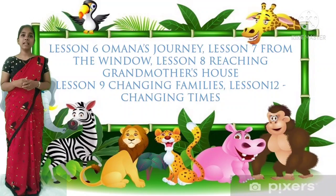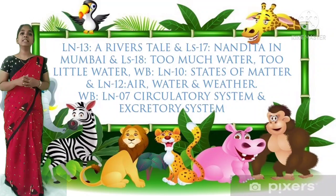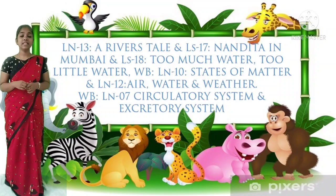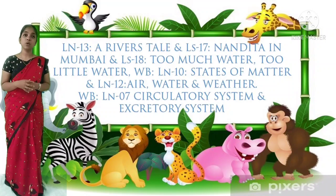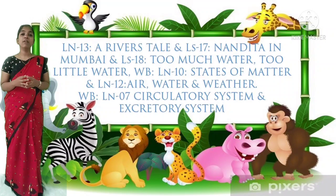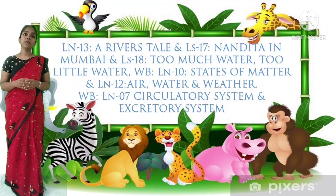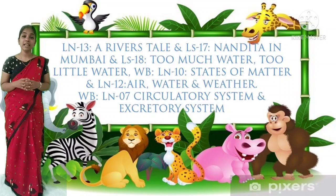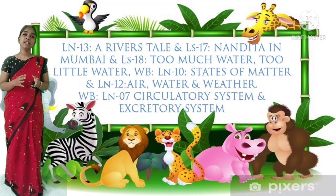Then lesson 9 - Changing Families. Lesson 12 - Changing Times. Lesson 13 - Reverse Day. Lesson 17 - Nandita and Mumbai. Lesson 18 - Too Much Water, Too Little Water. These three lessons are also a combined lesson. Then lesson 12 - Air, Water, Weather. Lesson 10 - States of Matter. And finally lesson 7 - Circulatory System and Excretory System.